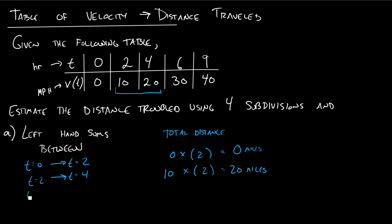And this is going to continue on for t equals 4 to t equals 6 and then from t equals 6 to t equals 9. In each of these cases I use my left velocity. So I'll go 20 times 2 equals 40 and then I'll go 30 times 2 equals 60. Now take a minute and check if I did anything wrong here.